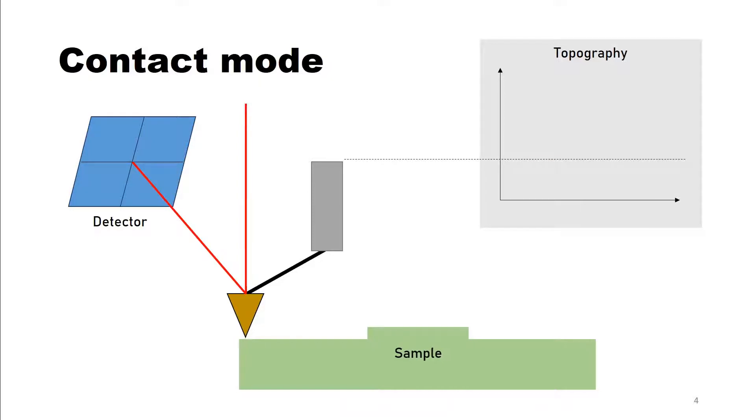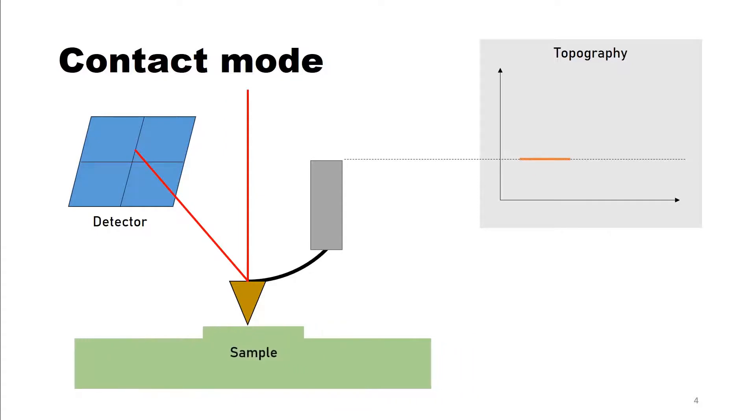As we scan the surface we encounter a hill. Due to repulsive forces the cantilever bends and the laser beam does not hit the detector centrically anymore.